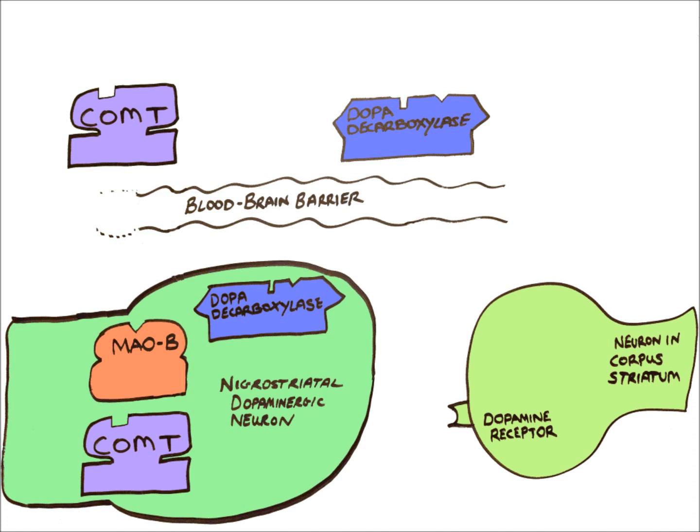One way to counteract this is to give the patient levodopa, the precursor to dopamine. Let's see what happens if we administer levodopa. As it will be given in tablet or capsule form, levodopa enters the systemic circulation outside the blood-brain barrier.